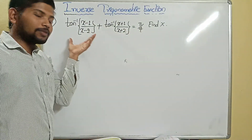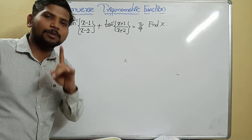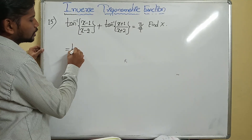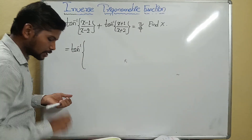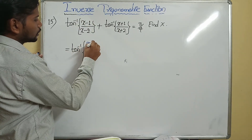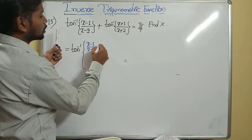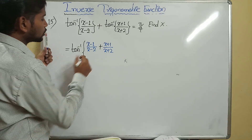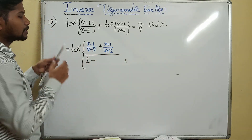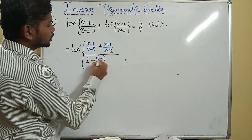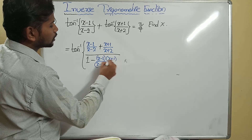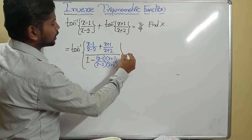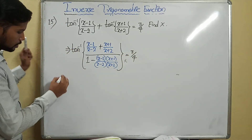Next question: find the value of x. Using the formula tan inverse of x plus tan inverse of y = tan inverse of (x + y)/(1 − xy), where x is (x−1)/(x−2) and y is (x+1)/(x+2). The denominator is 1 minus [(x−1)/(x−2)] × [(x+1)/(x+2)]. The right-hand side equals pi by 4.